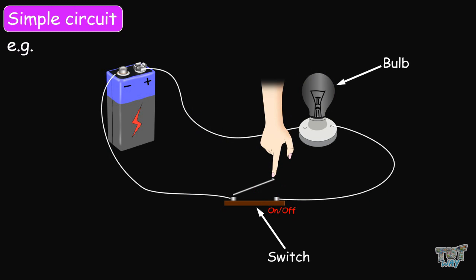So friends, we have learned what current electricity is, what a circuit is, and the various parts of the circuit.